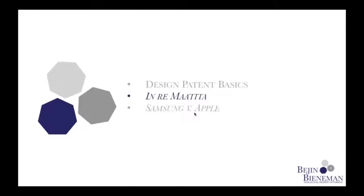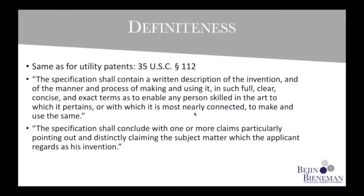With these basics under our belt, we can jump into the first case: Enri Matita. The topic at issue in Matita was definiteness. The same provision for definiteness applies to both utility patents and design patents. For patent lawyers, this should be very familiar language: the description has to have such full, clear, concise, and exact terms to describe how to make the invention to any person skilled in the art, and the claims must particularly point out and distinctly claim the invention. But now these provisions are being applied to claims made of pictures instead of words.